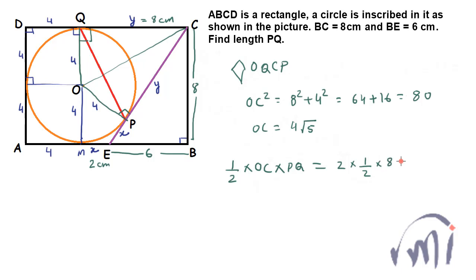So this will be equal to 2 times half of base multiplied by height, so base is 8 centimeters and height is 4 centimeters. So this half will cancel this 2, and value of PQ can be written as 8 multiplied by 8, 64 divided by OC. And OC is equal to 4 root 5, so this will be equal to 16 divided by root 5. So length of PQ is actually equal to 16 divided by root 5 centimeters.